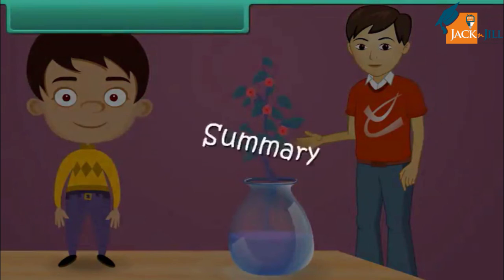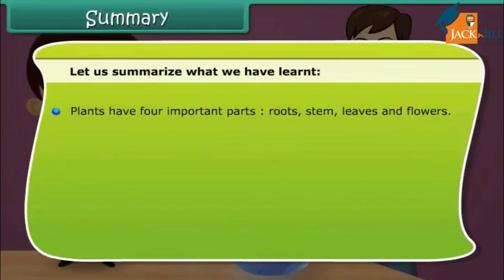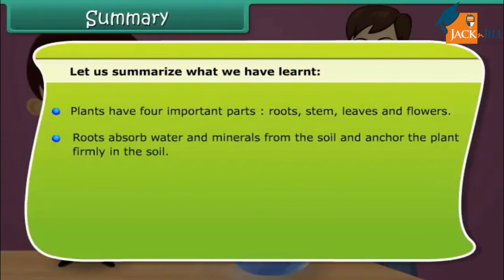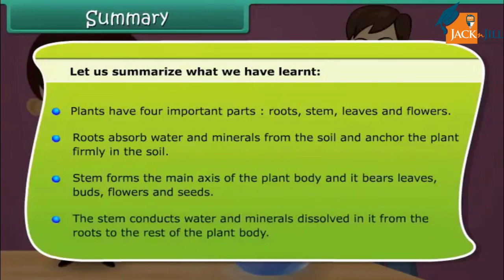Let us summarize what we have learned. Plants have four important parts: roots, stem, leaves, and flowers. Roots absorb water and minerals from the soil and anchor the plant firmly in the soil. The stem forms the main axis of the plant body and bears leaves, buds, flowers, and seeds. The stem also conducts water and minerals from the roots to the rest of the plant body.